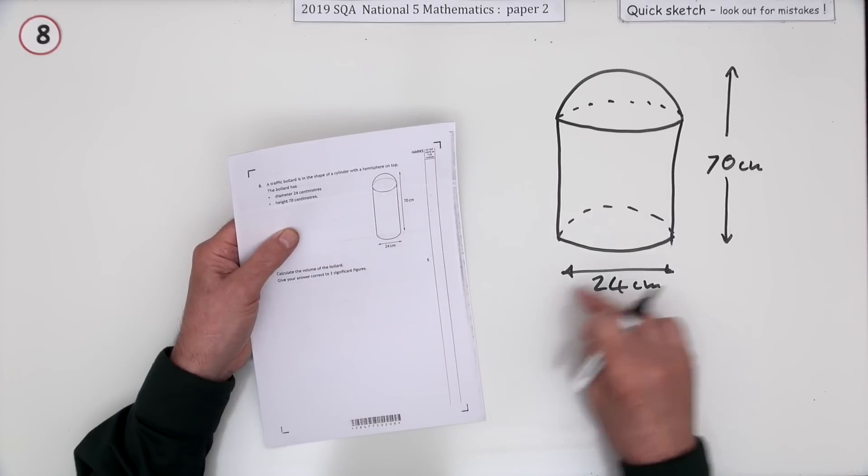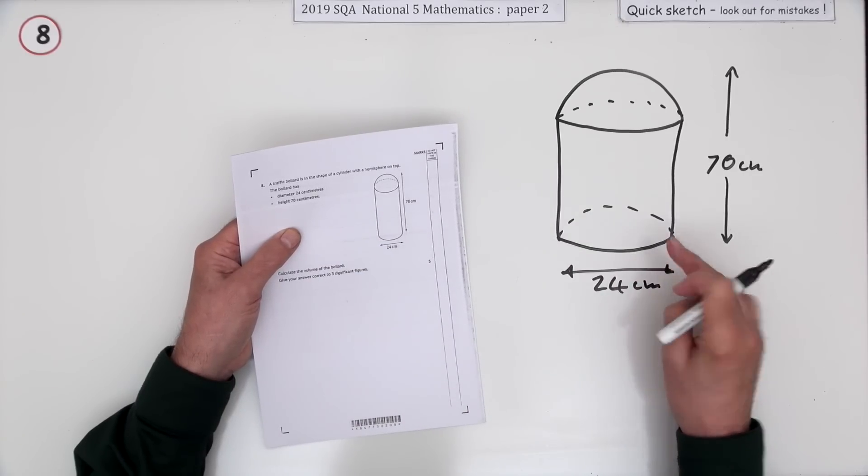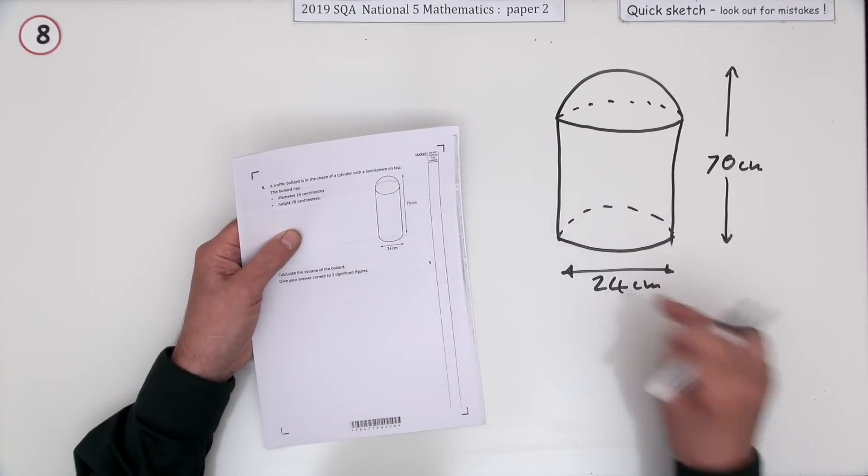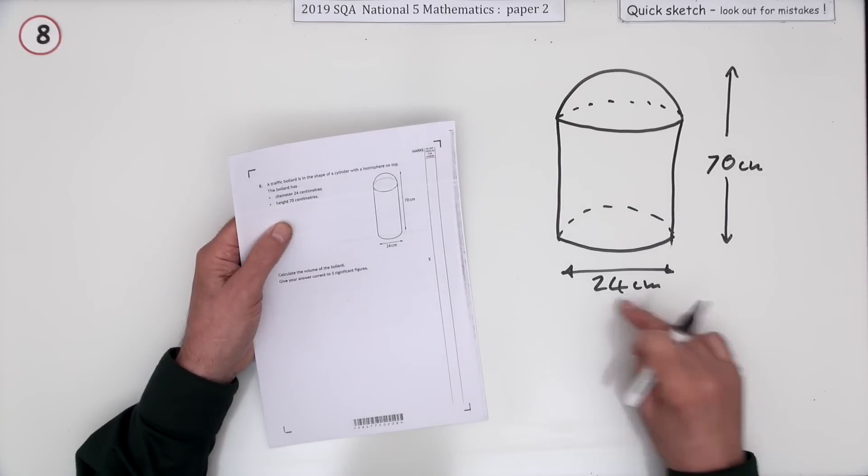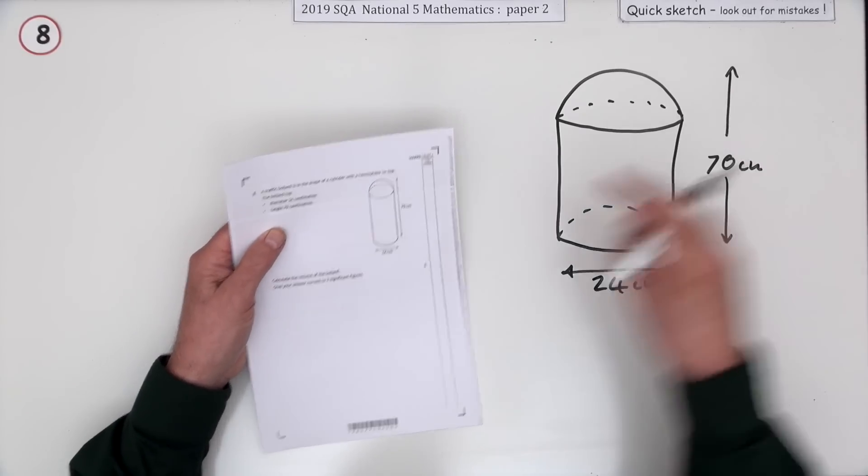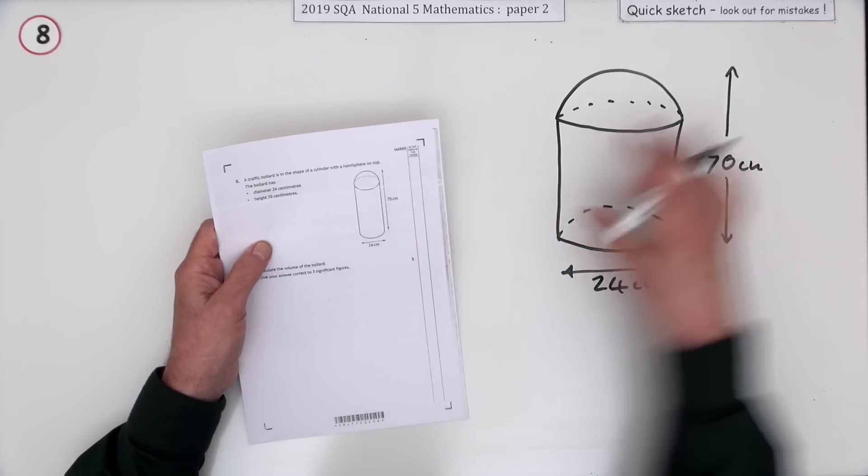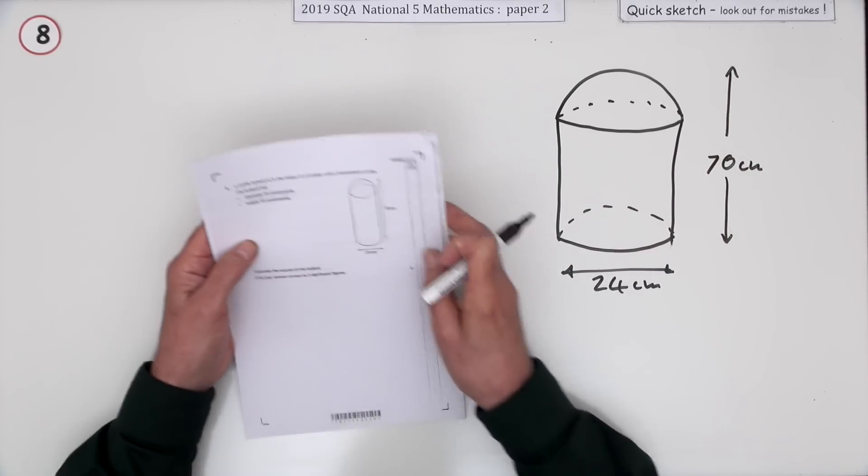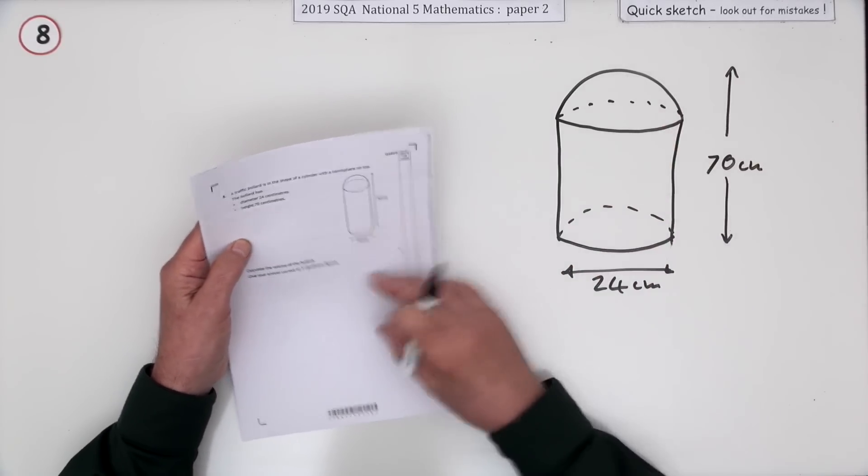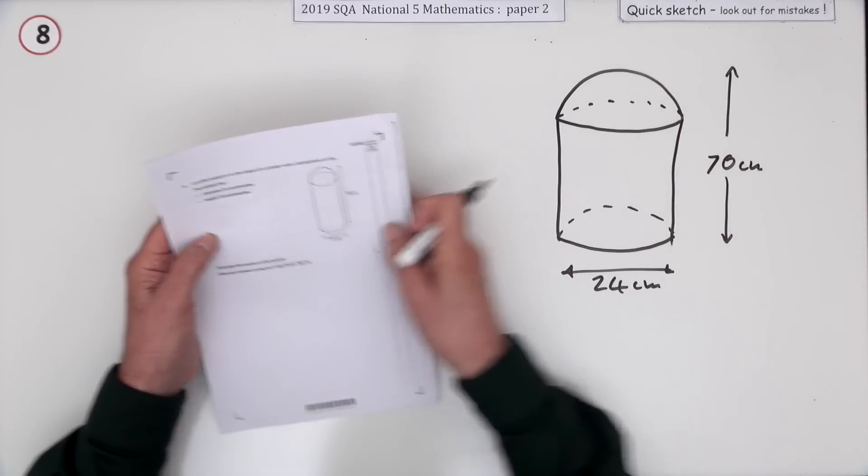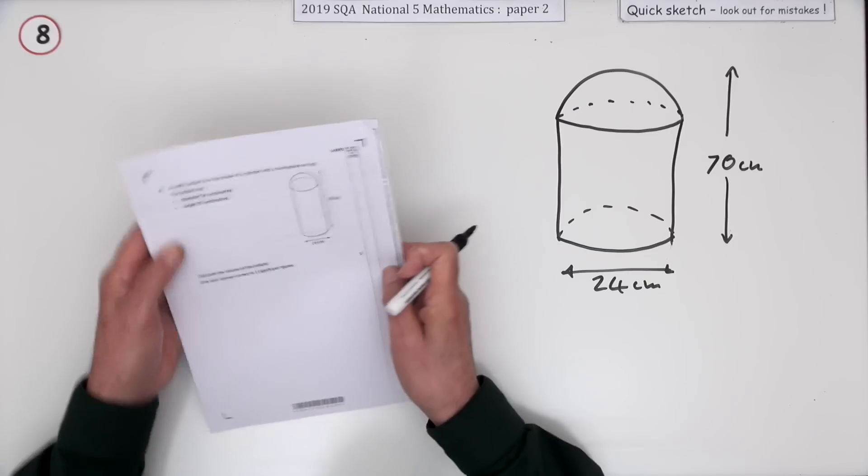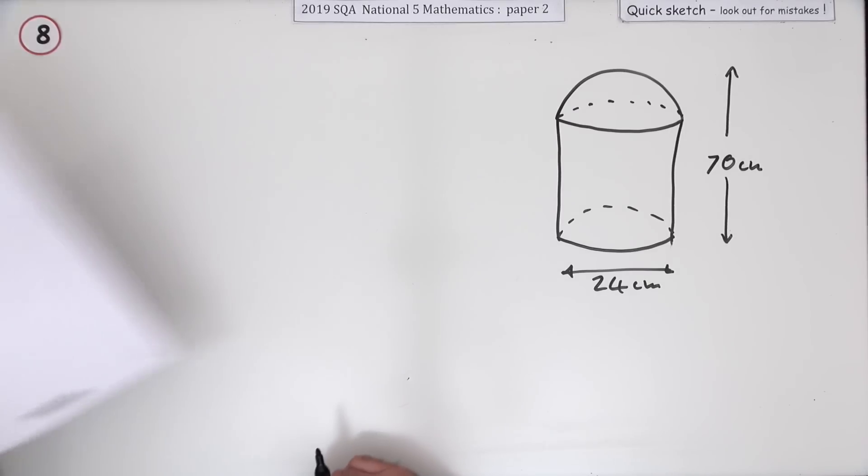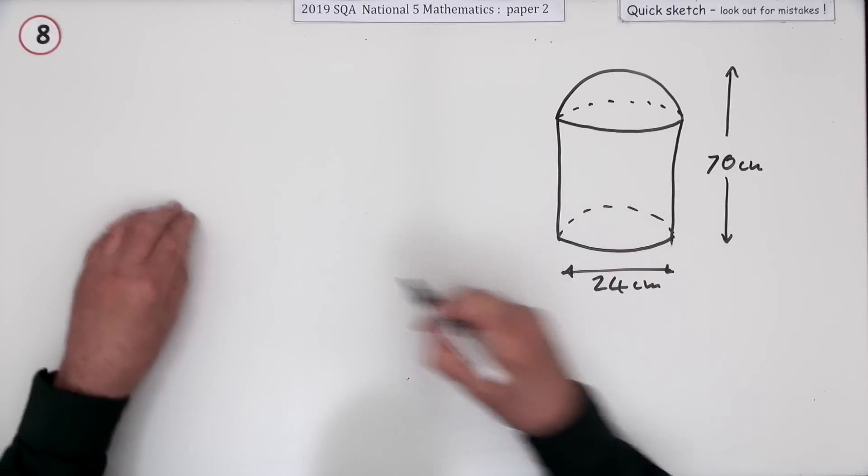It gives you the sizes. The diameter of the base is 24 centimeters, but the overall height is 70 centimeters. I'm not quite drawing that to scale, just because of the size business, but it's still perfectly formed from a cylinder and a hemisphere. Calculate the volume, giving your answer to three significant figures.